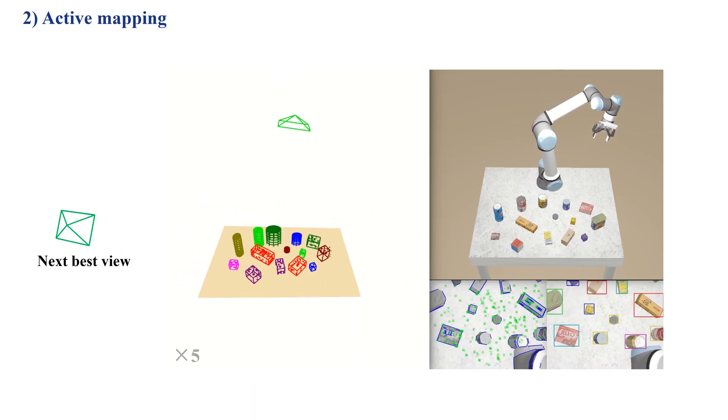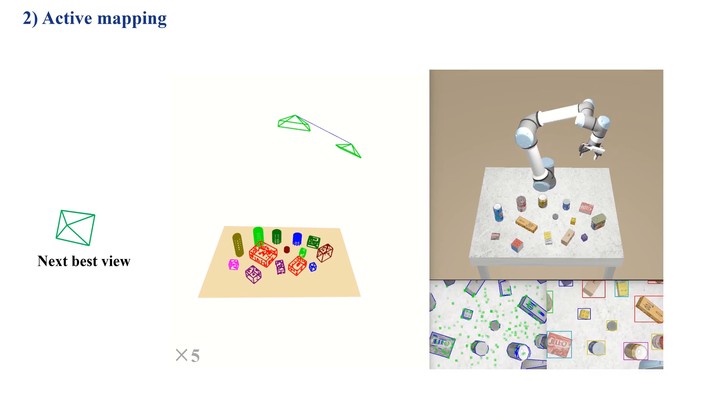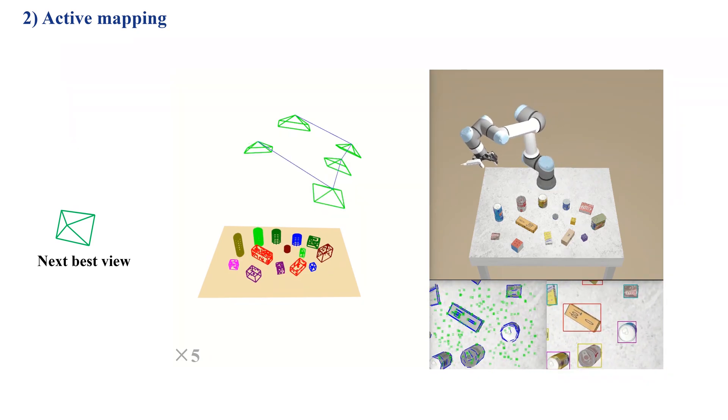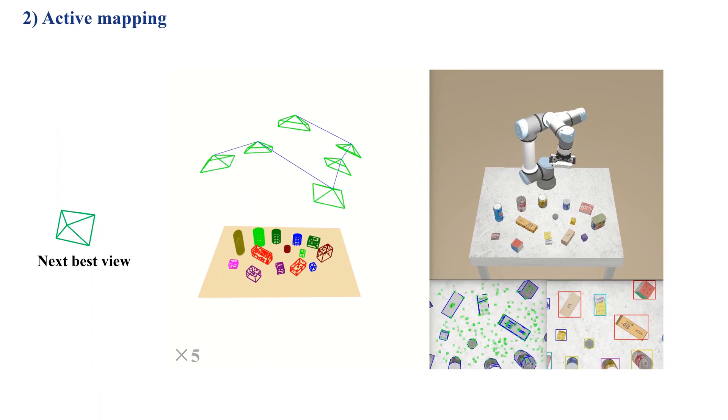Then, according to the uncertainty of the map, the robot arm is actively driven to explore the environment to obtain a more accurate map.